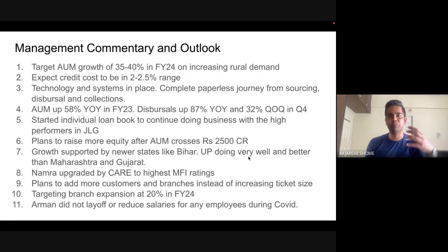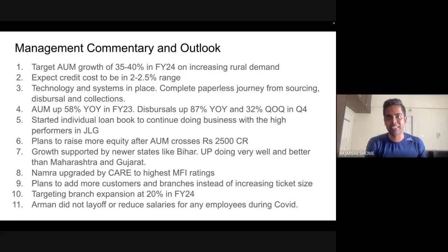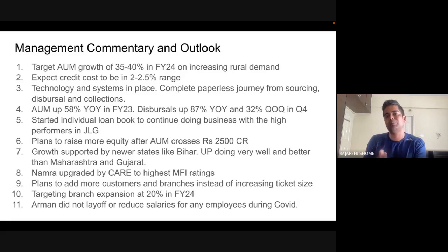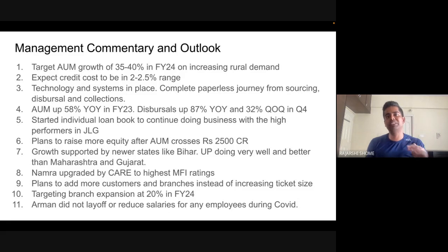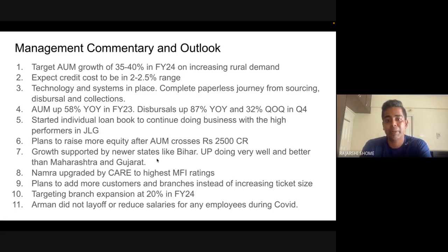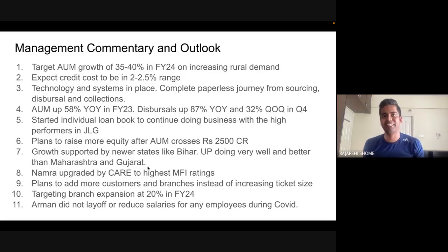With the AUM now at 2,000 crore and targeting 30 to 50 percent growth, Arman will need to constantly raise equity and dilute to get more capital to lend. Growth is supported by newer states like Bihar, which is doing amazingly well, and UP. Interestingly, Maharashtra suffered the most during COVID among Arman's states, so once Maharashtra fully recovers to pre-COVID levels, growth will accelerate further.